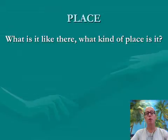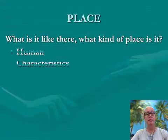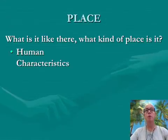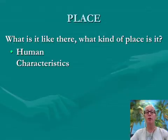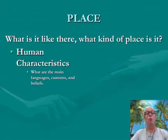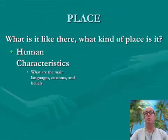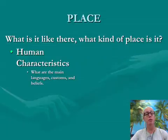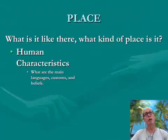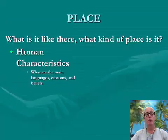The second theme is place. Place answers the question: what is it like there? What kind of place is this? One way we break down place is to look at the human characteristics of a place — what are the languages, customs, and beliefs? If we looked at Calabasas as a place, you would ask: what languages are spoken here? What customs do we have — like what do people do on a Friday night when they want to have fun? And what are our belief systems? What do we think about what is right and wrong? Every place has its own customs and beliefs.